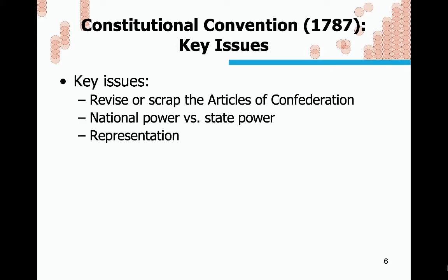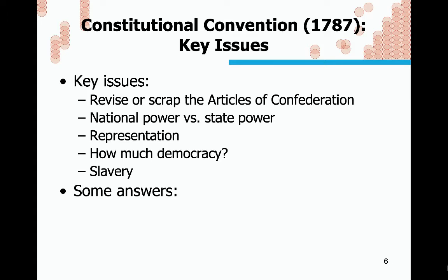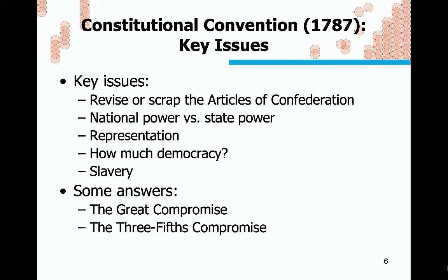The decision was made to hold the Constitutional Convention. Key issues included whether to revise or scrap the Articles of Confederation, how to reconcile national power versus state power — the federalists versus anti-federalists — how people and states would be represented, how democratic the document should be, and what to do about enslavement. These were all addressed more or less in the last batch of slides when I talked about the Great Compromise, or the Connecticut Compromise.